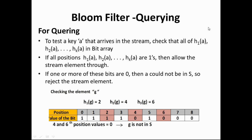Now let us see Bloom filter querying. To check whether a key arriving in the stream is in the storage, compute h1(a), h2(a), ..., hk(a) and look up those positions in the bit array. If all the positions corresponding to h1(a) through hk(a) are 1, then allow the stream element through. If one or more of these bits are 0, then that key cannot be in S — reject the stream element.